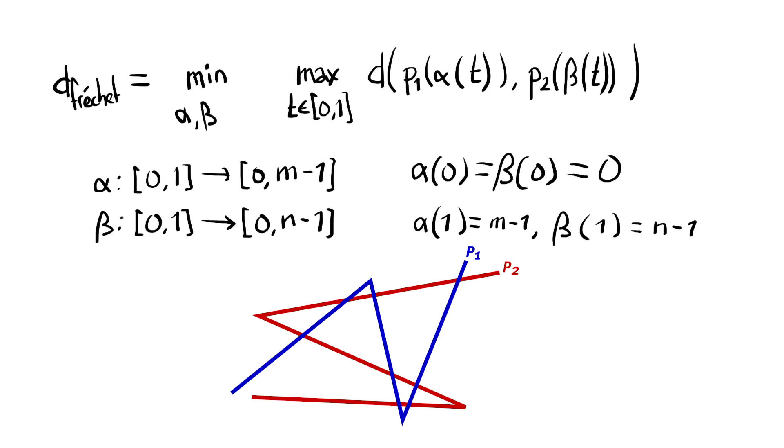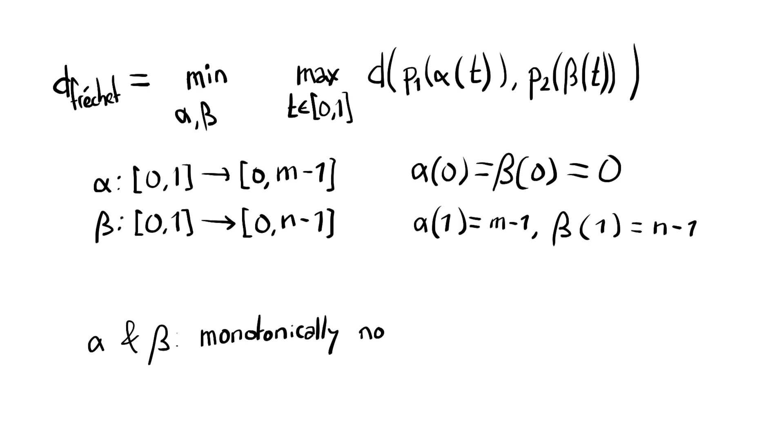What about not walking backwards? Well we can just say that these functions need to be monotonically increasing or to be slightly more specific monotonically non-decreasing because we do allow the value to stay the same. We do allow the man or the dog to stand still.